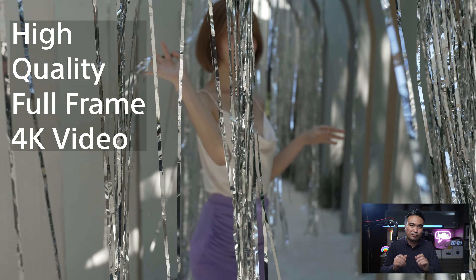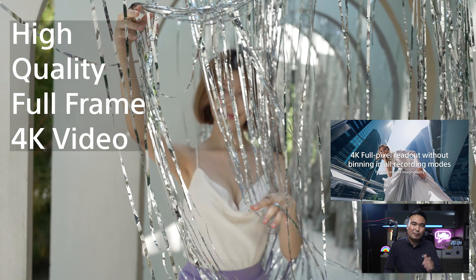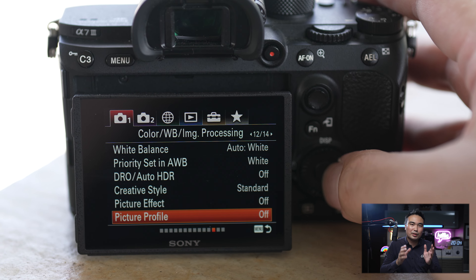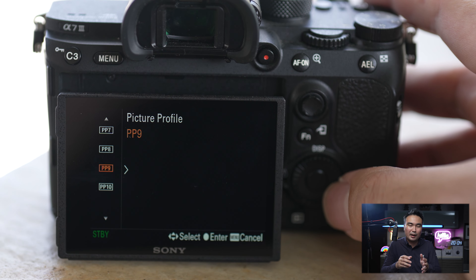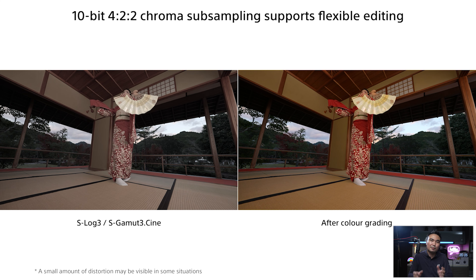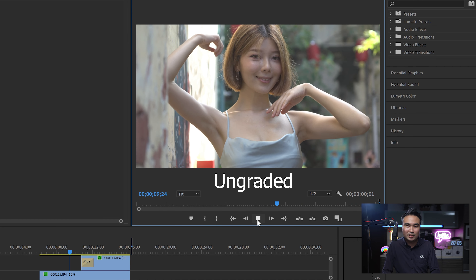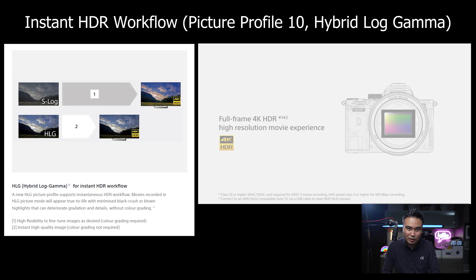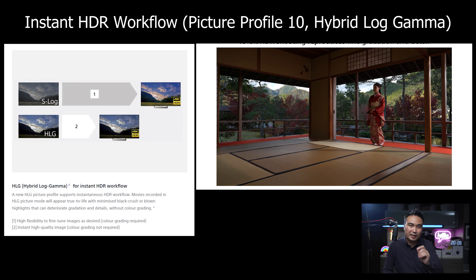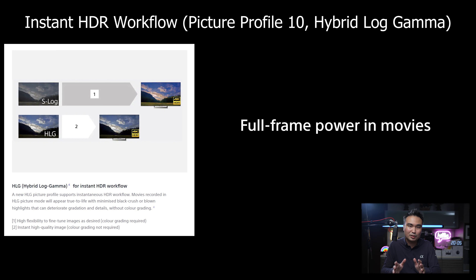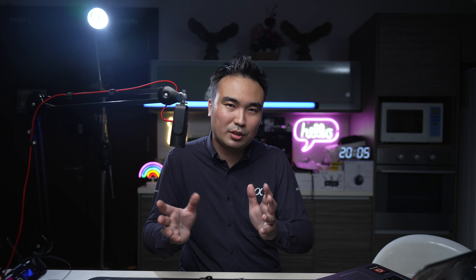Both A7 Mark IV and A7 Mark III can record high-quality full-frame 4K video that is full pixel readout without pixel binning, oversampling by reading the full width of the sensor, resulting in high resolution and detailed 4K video. You can also record in S-Log 2 and 3 — which is PP7, PP8, and PP9 — where the camera records quite flat footage for greater color grading flexibility in post-production via your NLE software such as Adobe Premiere Pro, DaVinci Resolve, and Final Cut Pro. Moreover, you can also record in HLG Hybrid Log-Gamma, which is PP10 in the camera settings, where color grading is not required to enjoy instant playback of high-quality true-to-life images with no blocked shadows or blown highlights on HDR HLG-compatible TVs.